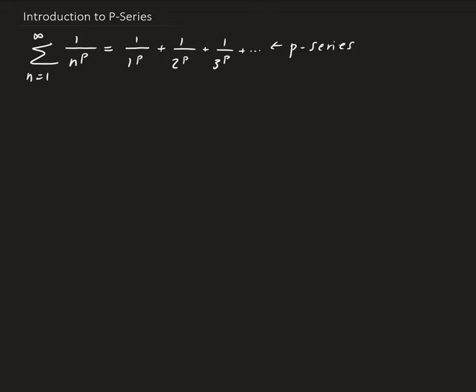So I'm going to talk about the p series. If we have the series going from 1 to infinity of 1 over n to the p, that is the same as expanding as 1 over 1 to the p plus 1 over 2 to the p plus 1 over 3 to the p and so on. This basically takes on the form of a p series where p has to be strictly bigger than 0.